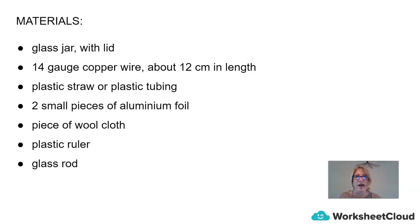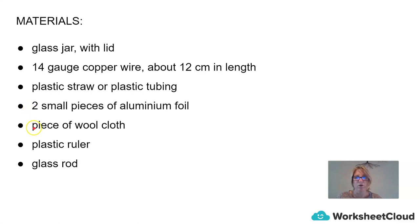In this lesson, we're going to try and build our own electroscopes. You'll need a glass jar with a lid, some copper wire — the thicker the better, but copper wire from an extension cord with insulation removed should be enough — a plastic straw or plastic tubing, two small pieces of aluminium foil, a piece of wool cloth, a plastic ruler, and if possible, a glass rod.